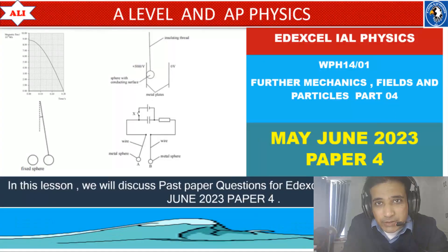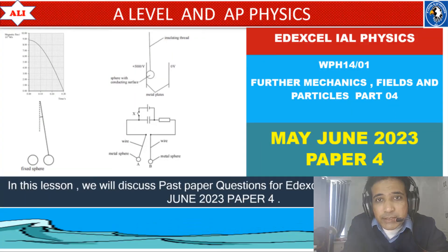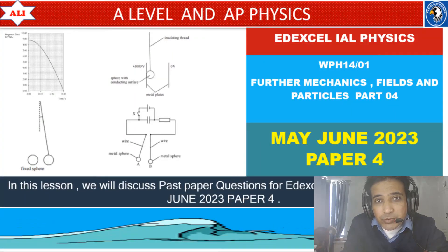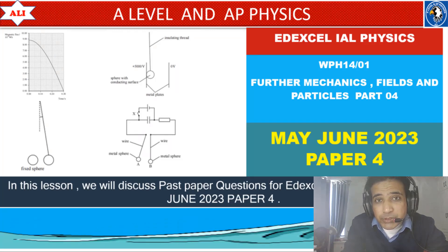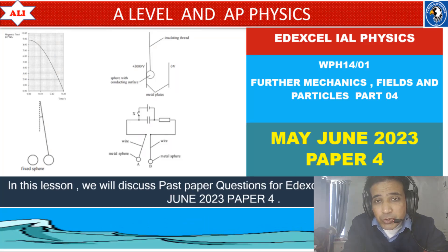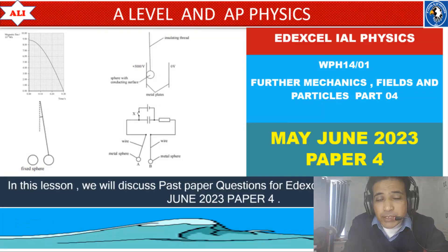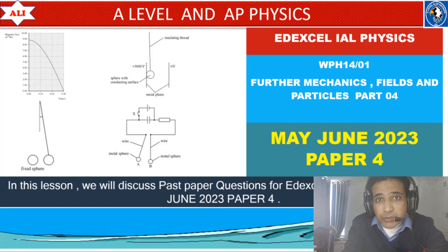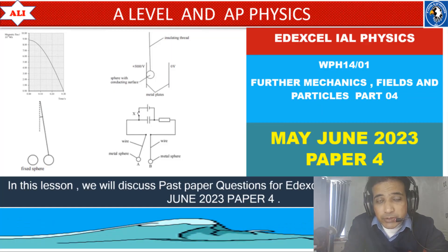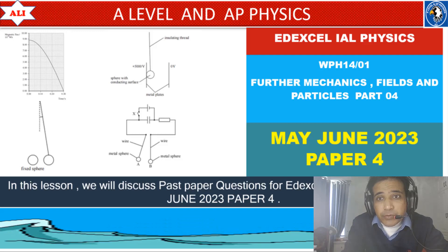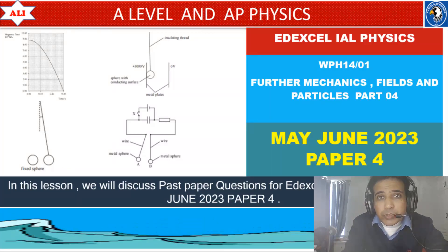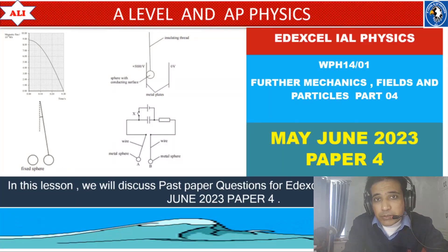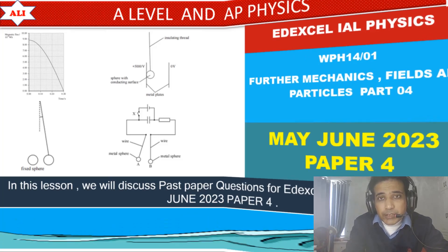Welcome to A-Level and AP Physics. In today's lesson we will discuss past paper questions from May June 2023 paper 4. As always, we will discuss these questions in detail so you can improve your conceptual understanding of physics and have a better understanding of exam questions. We will start from question 16 and try to cover questions 16, 17, and 18. Let's study together and improve together.